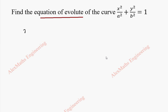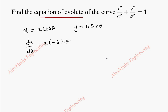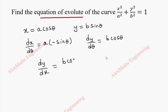We have the parametric form: x is equal to a cos θ, y is equal to b sin θ. From this we can find dx/dθ which is a times minus sin θ, and dy/dθ which is b times cos θ. So we can take dy/dx which is b cos θ divided by minus a sin θ, which can be written as minus b by a, times cos θ by sin θ.